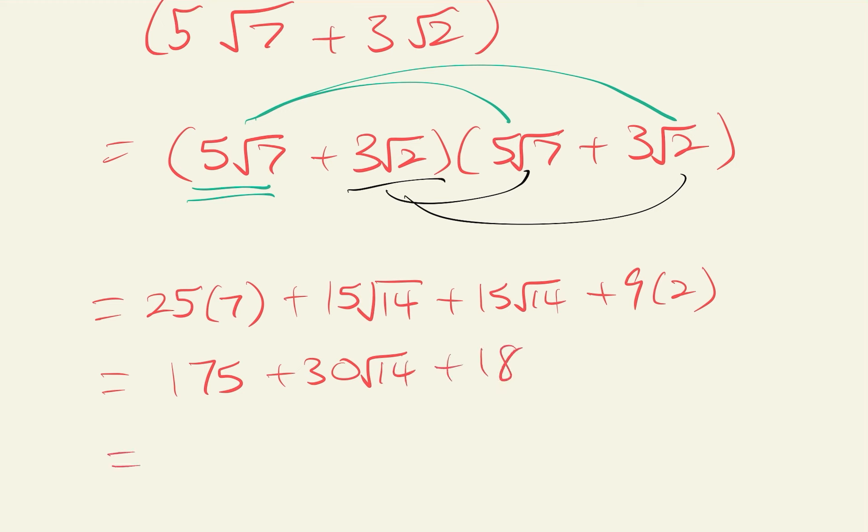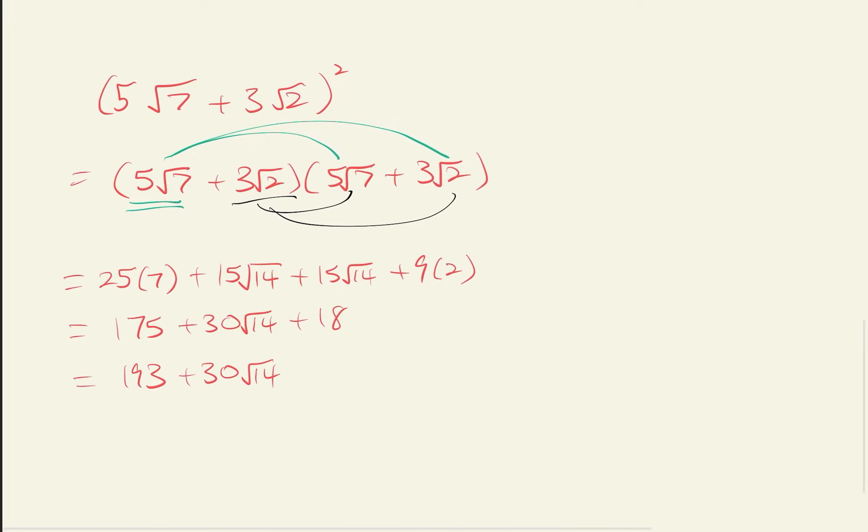So if we write this out, simplified, we get 193 plus 30 square root 14. Okay, very good. We got this, man. We too good already. Okay, next question. Let's come here.